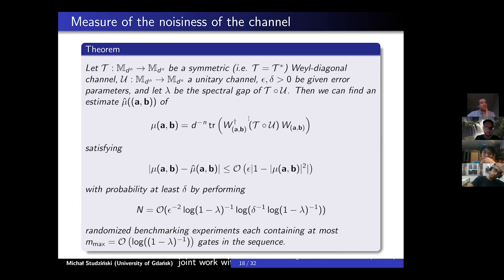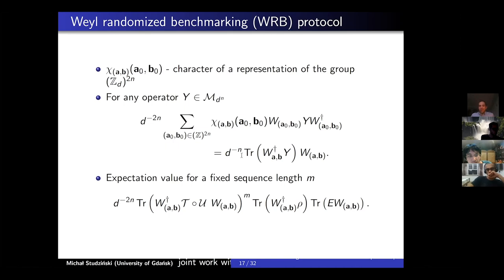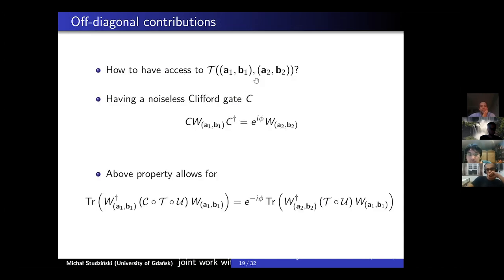A question about how many irreducible representations the Weyl group has — it seems exponentially many. But note that here we consider a specific string, so it's probably just like two elements forming a subgroup — those elements square to the identity channel. You focus on this particular string. For off-diagonal elements, this is a weakness of our protocol: to get knowledge about off-diagonal elements, we have to assume access to noise via a Clifford gate C. From general theory, we know there always exists such a C which maps string (A1,B1) to (A2,B2), because Clifford gates act on Weyl operators like permutations — they map one Weyl operator to another, multiplying by a phase.